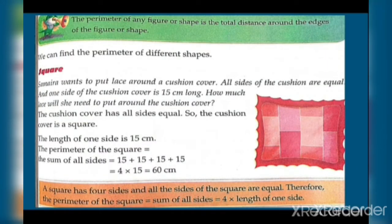We can find the perimeter of different shapes. For a square: Samira wants to put lace around a cushion cover. All sides of the cushion are equal and one side is 15 cm long. Since all sides are equal, 15 plus 15 plus 15 plus 15 equals 60. So she will need 60 cm of lace, which is the perimeter — the sum of all four sides.